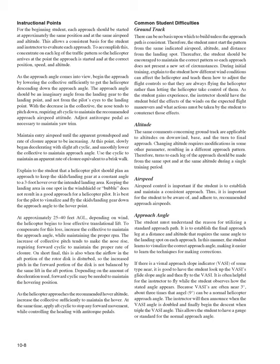At approximately 25 to 40 feet AGL, depending on wind, the helicopter begins to lose effective translational lift. To compensate for this loss, increase the collective to maintain the approach angle while maintaining the proper RPM. The increase of collective pitch tends to make the nose rise, requiring forward cyclic to maintain the proper rate of closure. On short final, the airflow in the aft portion of the rotor disc is disturbed, so the increased pitch in the forward portion of the disc is not balanced by the same lift in the aft portion. Depending on the amount of deceleration used, forward cyclic may be needed to maintain the hovering position. As the helicopter approaches the recommended hover altitude, increase the collective sufficiently to maintain the hover, apply aft cyclic to stop forward movement, and control heading with anti-torque pedals.